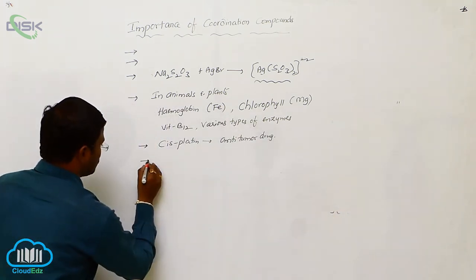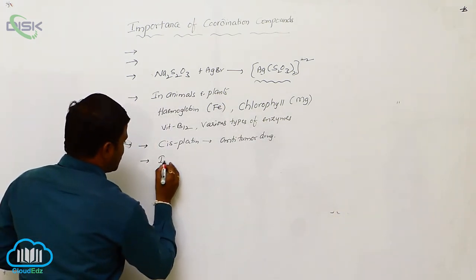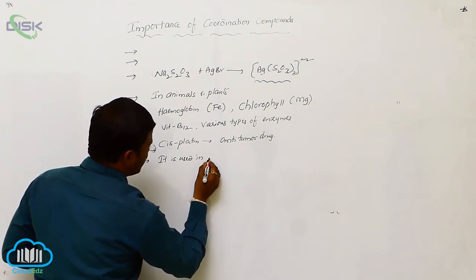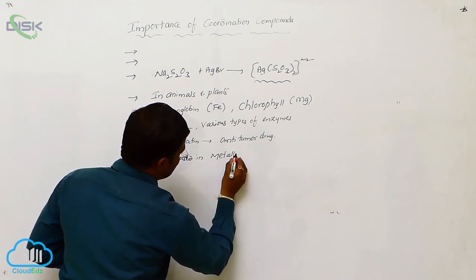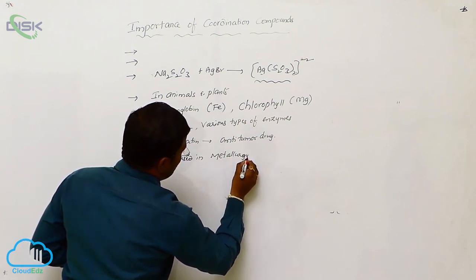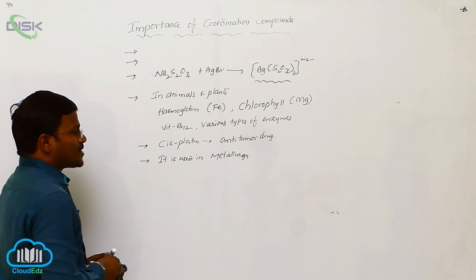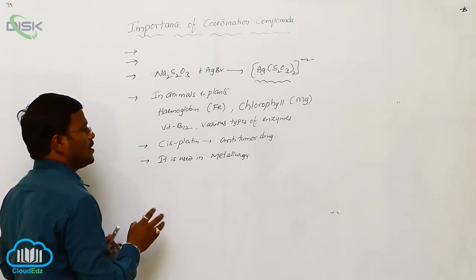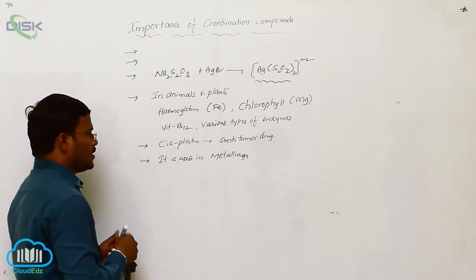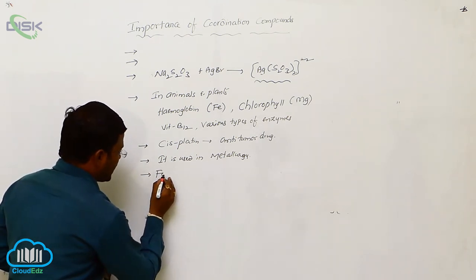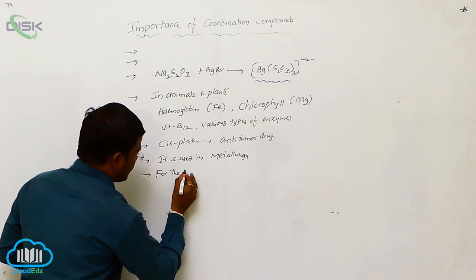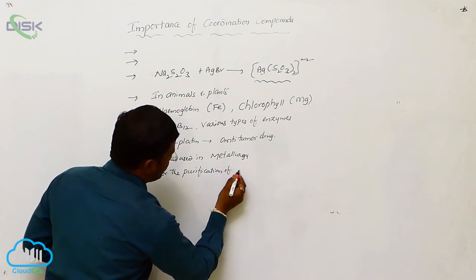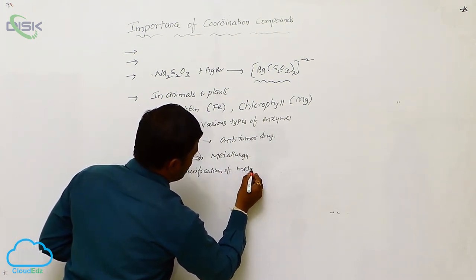Next, one more. It is used in or they are used in metallurgy, that means for the extraction or isolation of metals from their minerals and also for the purification of metals, the coordination complexes are used by us.